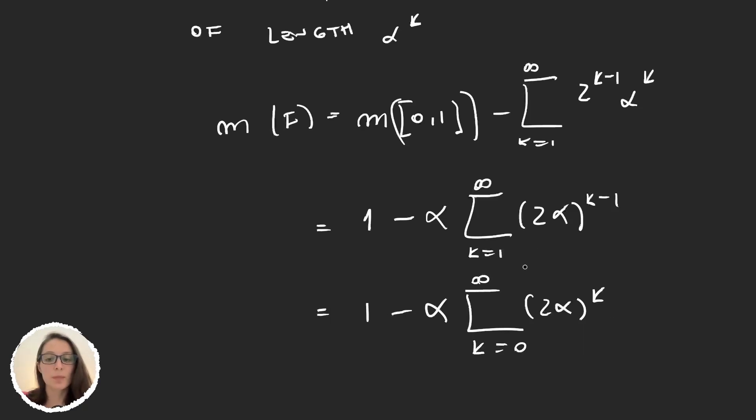And so this is the reason why we actually set α to be smaller than 1/2, because then 2α is smaller than 1. And this is a geometric series that we know converges.